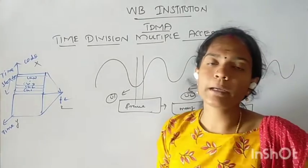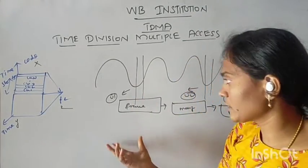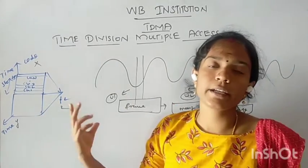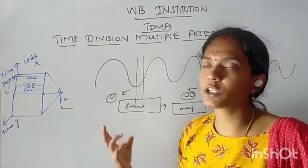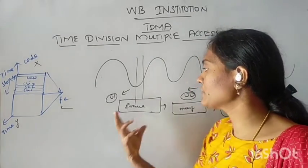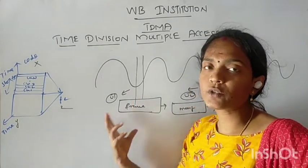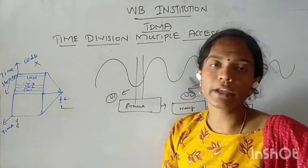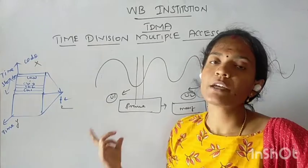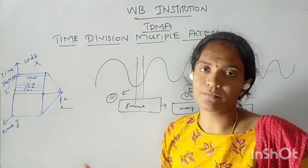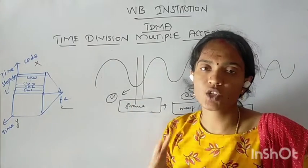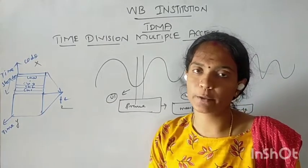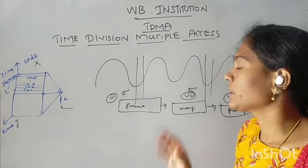In TDMA, user 1 transmits data. The user 1 transmits, then it is user 2's turn. When user 2 goes, it is cyclically repeated — the user will wait. That is: store the information, data store. That is TDMA.